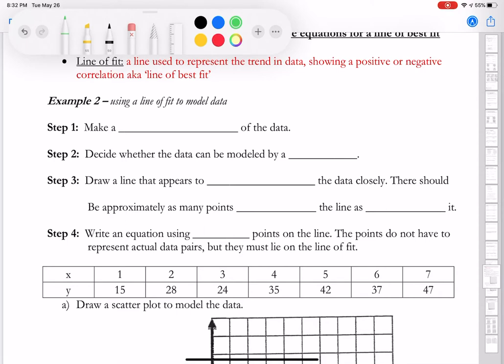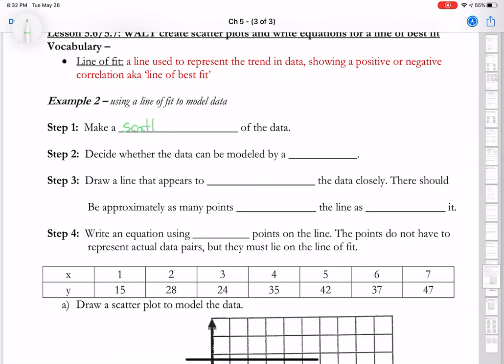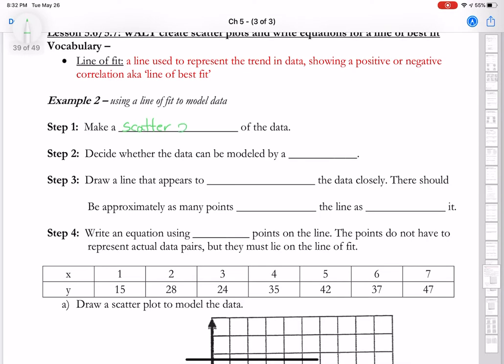So the first step is always to make a scatter plot. You'll always be given the data. And if you're not, you're putting the data together. So you create a scatter plot, label your X and Y, and then we need to decide whether the data can be modeled by a line. Remember, if it's no correlation, then it cannot be modeled by a line, meaning you cannot find a line of best fit. It's not possible.